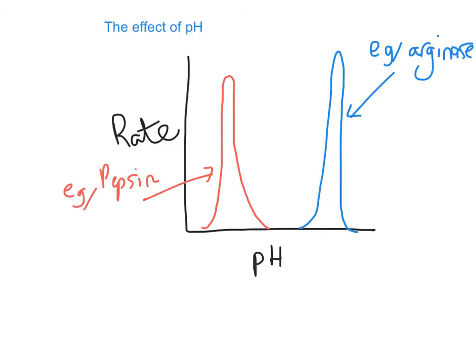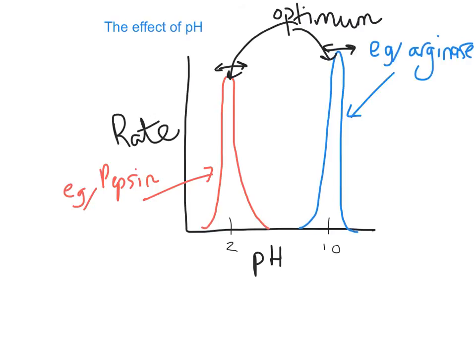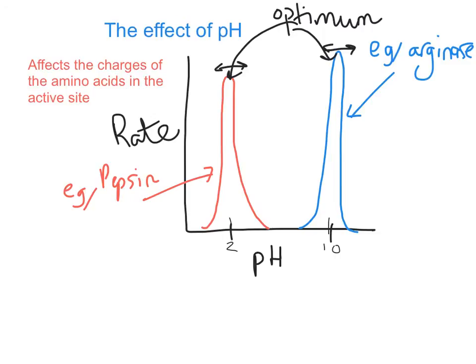pH is a measure of hydrogen ion concentration, and a change in pH can affect enzyme activity. The graph shows two enzymes: pepsin, which breaks down proteins in the stomach and has an optimum around pH 2, which is quite acidic, and arginase, which has a much higher pH optimum. In both cases, they have an optimum pH at which they work, and either side of that they quickly denature.